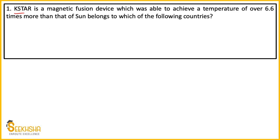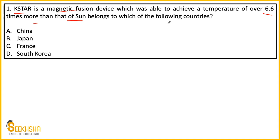The first question: K-STAR is a magnetic fusion device which was able to achieve a temperature of over 6.6 times more than that of the sun. Which of the following countries does it belong to? K-STAR is a magnetic fusion device — in this experiment the temperature was increased 6.6 times that of the sun. Which country conducted this experiment? China, Japan, France, or South Korea?